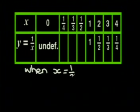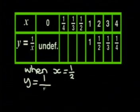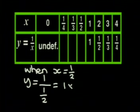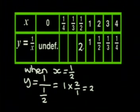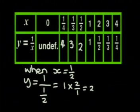When x is a half, y is 1 over a half. Remember that to divide by a half is the same as multiplying by 2 over 1. So y is 2. Y is the inverse of a half. I'm with you. So when x is a third, y will be 3. And when x is a quarter, y will be 4.